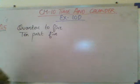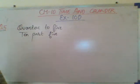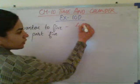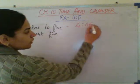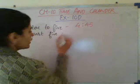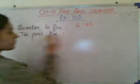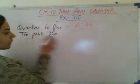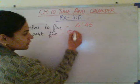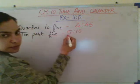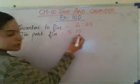So quarter to 5 — what does it mean? Quarter to 5 means the timing is 4:45. And 10 past 5 — what does it mean? It means 5 hours 10 minutes, that is 5:10.